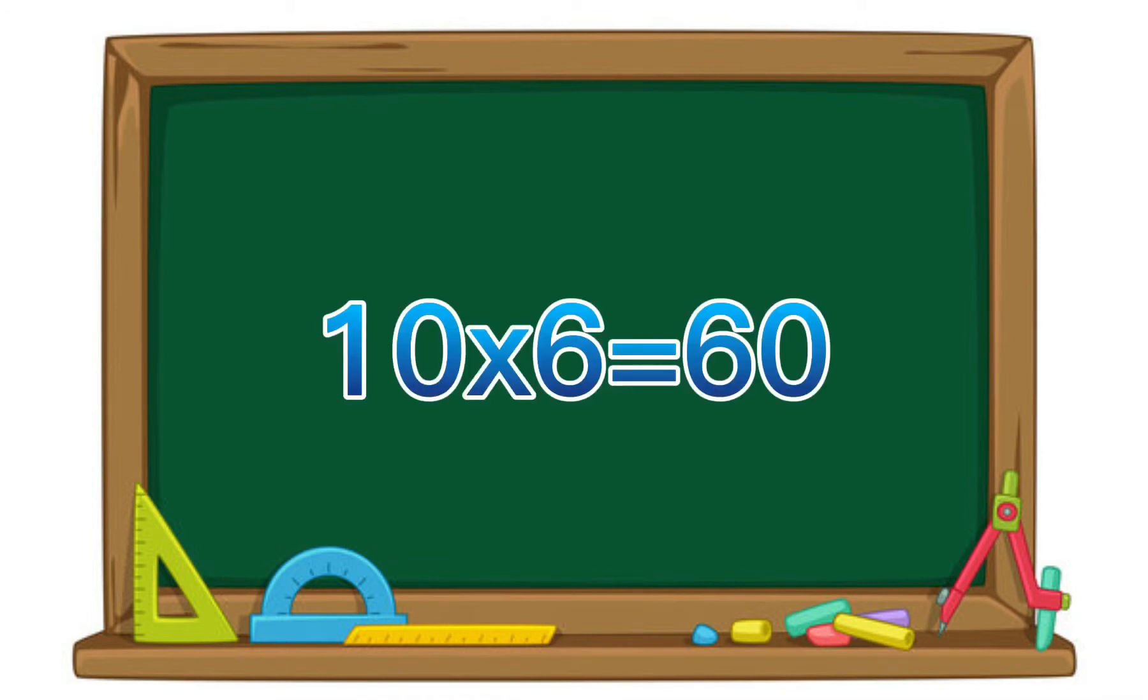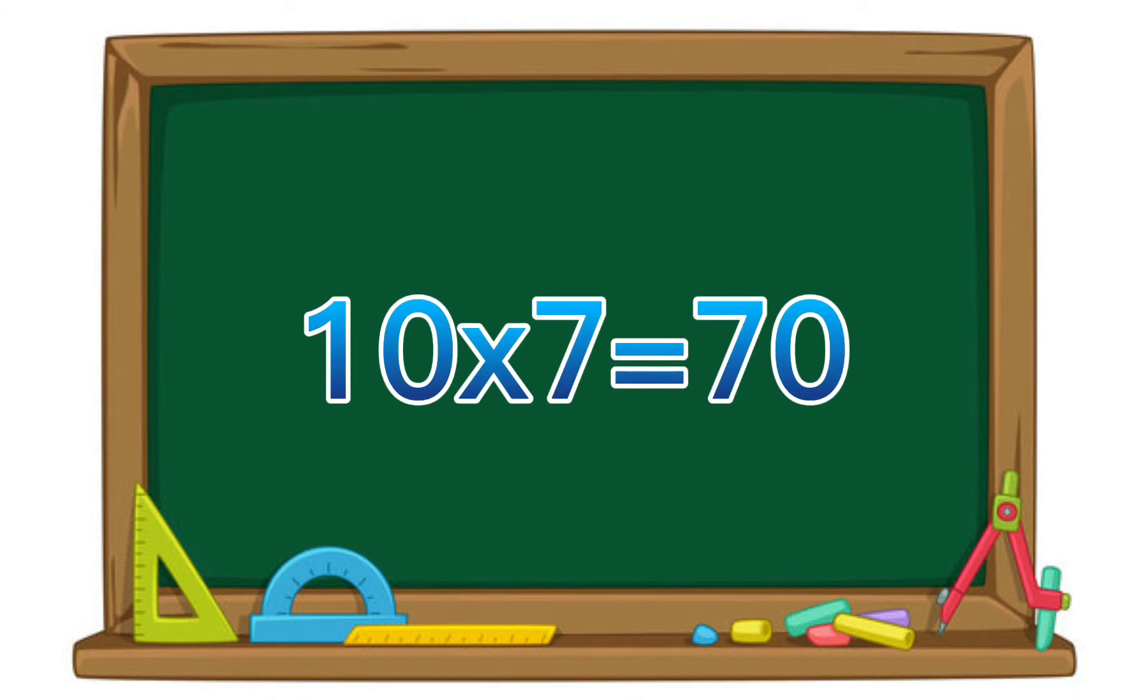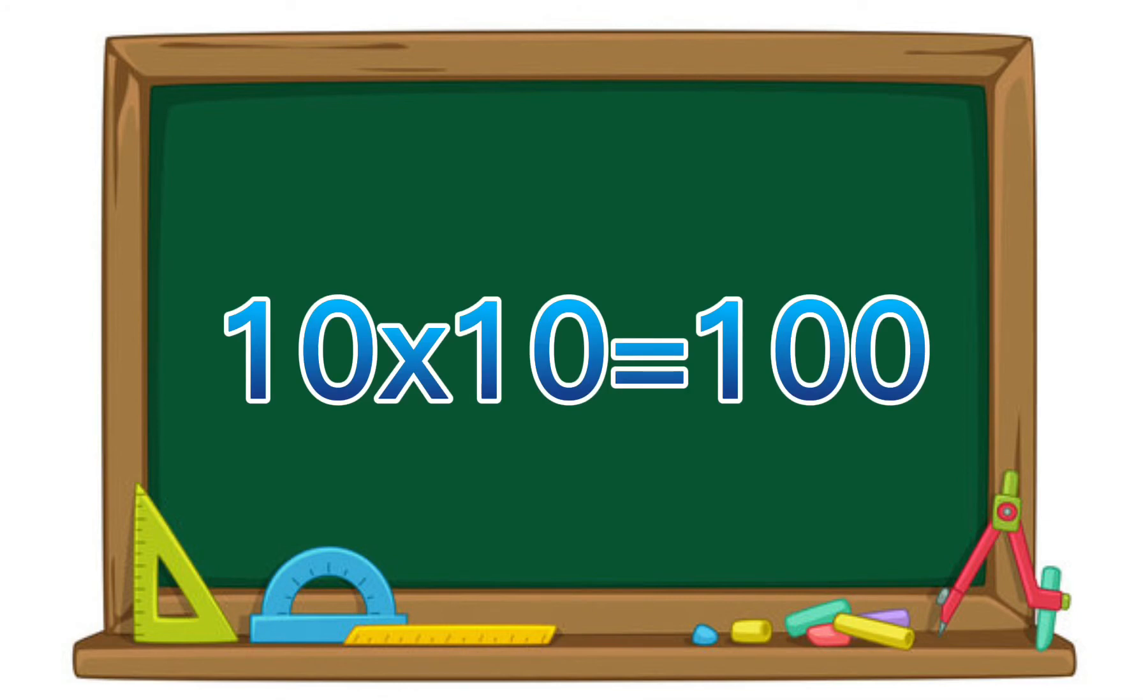10 times 6 equals 60. 10 times 7 equals 70. 10 times 8 equals 80. 10 times 9 equals 90. 10 times 10 equals 100.